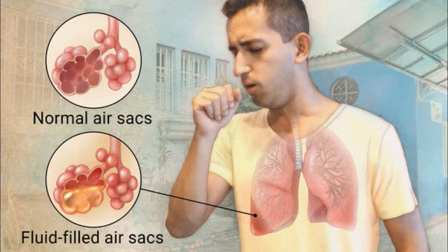Transmission: Pneumonia can be spread in a number of ways. The viruses and bacteria that are commonly found in a child's nose or throat can infect the lungs if they are inhaled. They may also spread via airborne droplets from a cough or sneeze. In addition, pneumonia may spread through blood, especially during and shortly after birth.